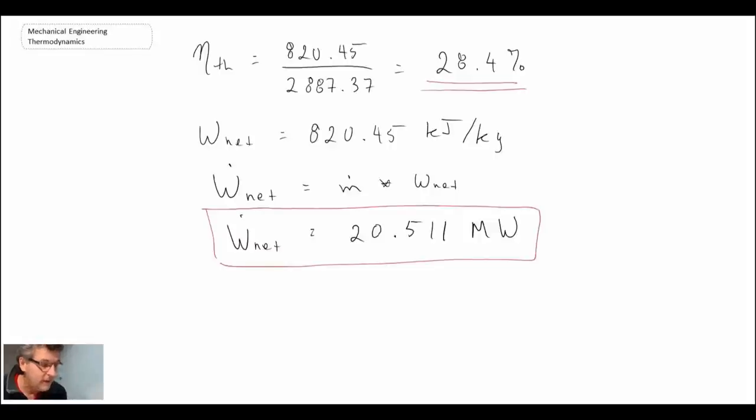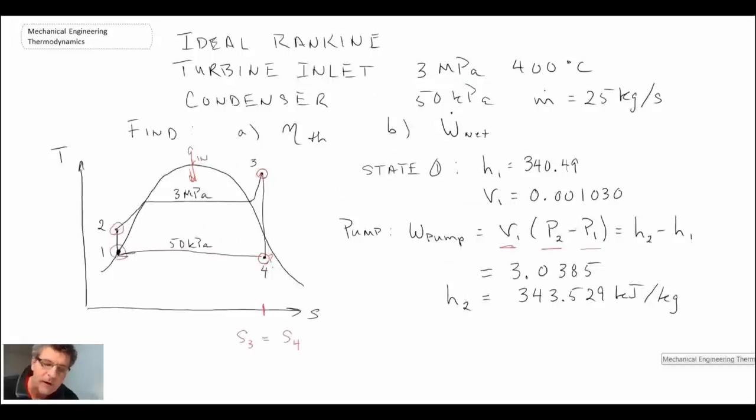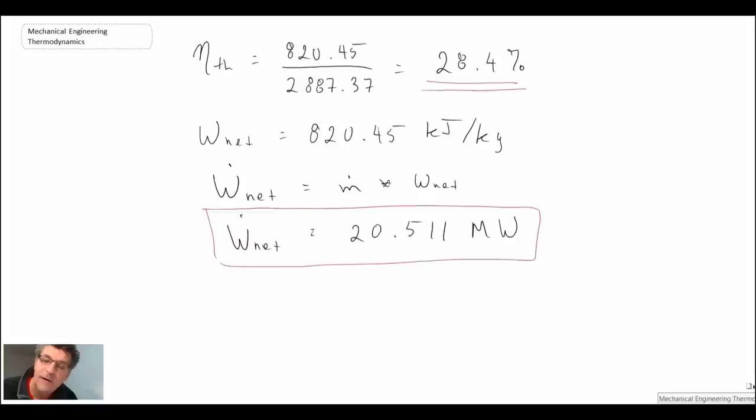That concludes this example problem. You can see it's straightforward and simple, but whenever you're solving these problems, write out the TS diagram to begin with. Sometimes you kind of got to jump around a little bit. I made a guess that expansion went into the two-phase region, which in the end it did, as we can tell by the quality. That's the TS diagram that came out correct. The next segment, we'll take a look at a more challenging example problem, again dealing with the Rankine cycle.